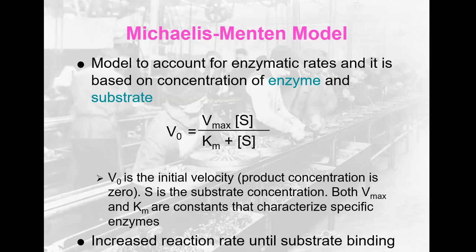The Michaelis-Menten model accounts for enzymatic rates and is based on the concentration of the enzyme and the substrate. The equation is: V₀ = Vmax × [S] / (Km + [S]). V₀ is the initial velocity when product concentration is zero, S is the substrate concentration, and both Vmax and Km are constants characteristic of specific enzymes. These are known values plugged into analyzers — not something you calculate manually. These things are usually calculated by the analyzer; it's just nice to know the math and the process behind it.